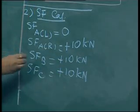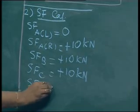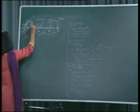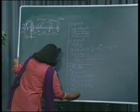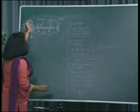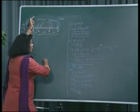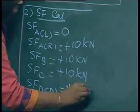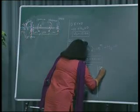Then shear force at point D. D is again a point load, so when a point load is there we have to go for just right and just left. Shear force at point D just right — put your hand on the section and see on the right side. Only one load, so plus 10 kilo Newton.